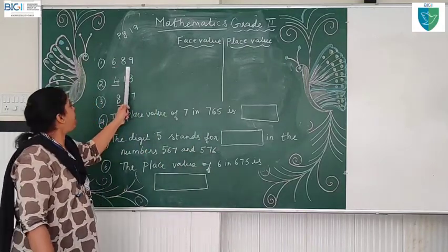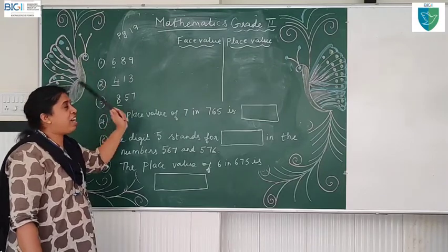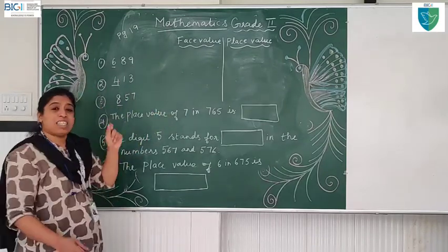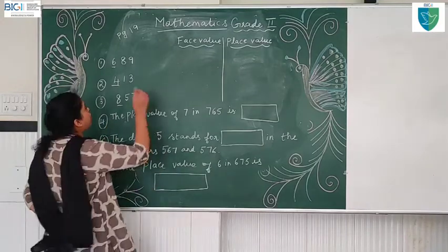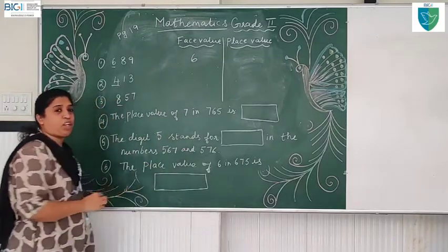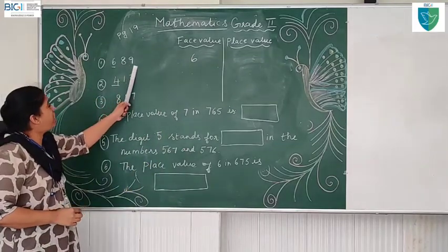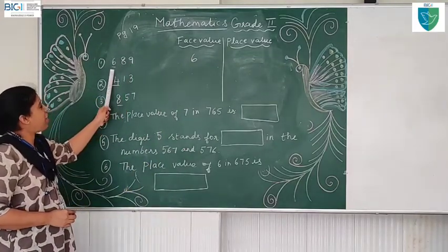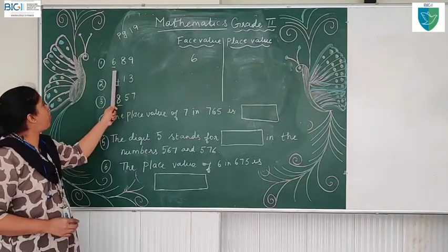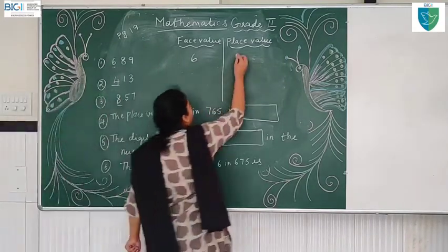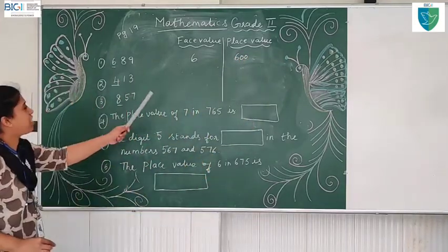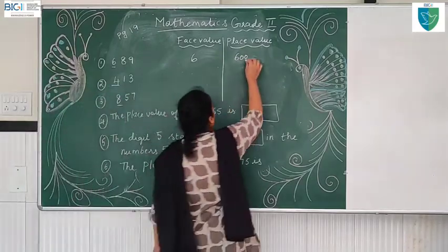See: six hundred eighty nine. Now what is the face value? Face value of six — face value is the same number, so it is six. Now what is the face value? Ones, tens, hundreds. Six is in the hundreds place. Face value of six is six hundred. Understood? Face value of six is six hundred.